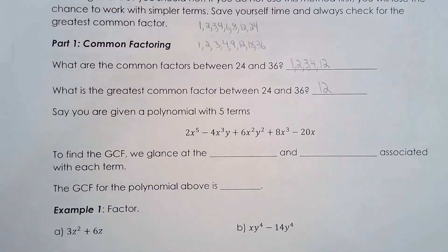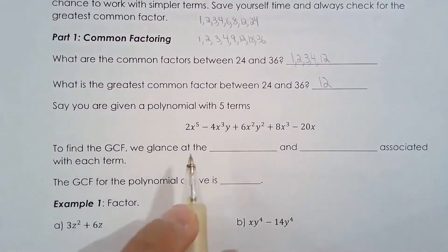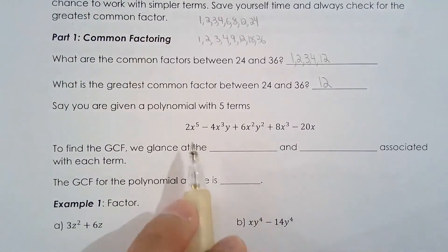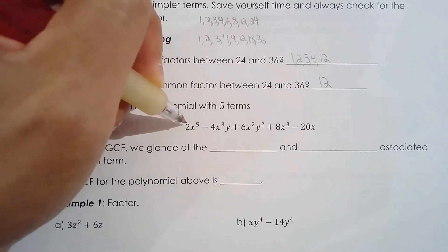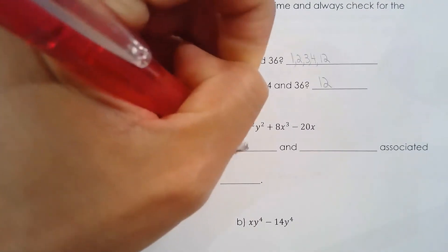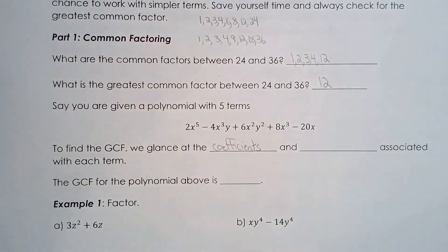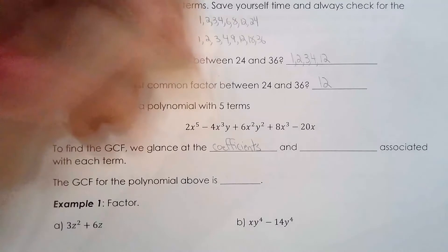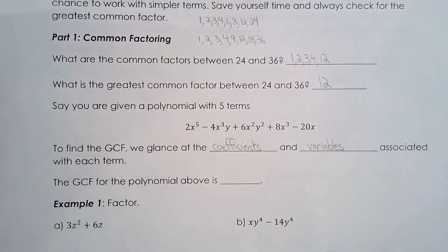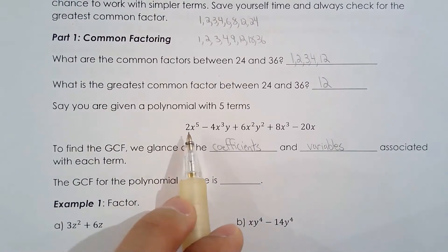Let's move on to something more in line with what we're doing in this course. You're given a polynomial with five terms. What we want to do is find the greatest common factor between these five terms. The strategy is to glance at each term, which is made up of two parts: the coefficients — some people say numerical coefficients — and the variables associated with each term. Let's look at the coefficients first.